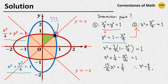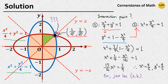From here, y squared also equals 4 over 5. Therefore, the intersection point in the first quadrant is (2 over square root of 5, 2 over square root of 5). Of course, you can just use symmetry instead — this intersection point must lie on the line y equals x, so we can let (k, k) be its coordinates.